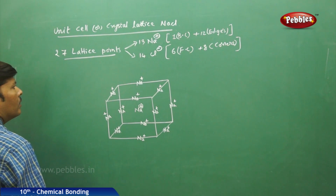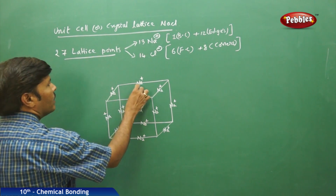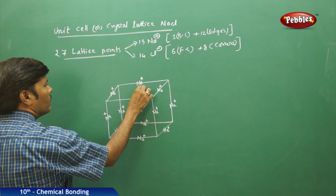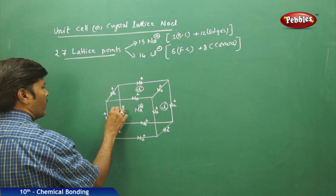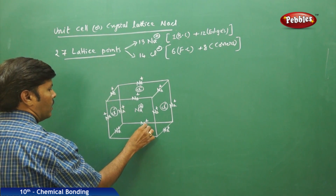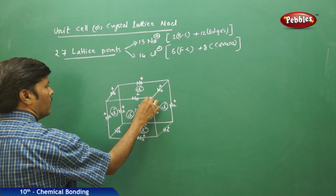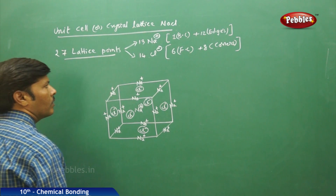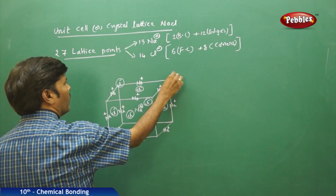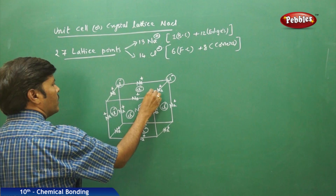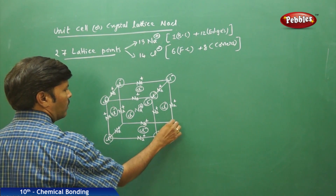For chloride ions, there are 14 chloride ions occupying 6 faces and 8 corners. So 6 Cl minus ions are placed on the faces and 8 Cl minus ions are placed at the corners.